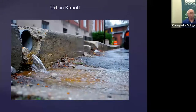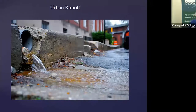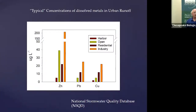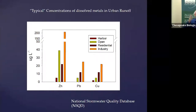Urban runoff is probably one of the most understudied components. It's a very challenging environment to work in — I was joking with a colleague: he goes to the Arctic and plans a year ahead; I find the same with urban runoff systems. When's it going to rain? How am I going to get there? Typical concentrations of dissolved metals in urban runoff: I've pulled these from a water quality database and compared them to what I see in Baltimore Harbor. Open sites, residential areas, and industrial areas show exactly how you'd expect — high concentrations of metals in industrial areas and low concentrations in the harbor, because they precipitate out.